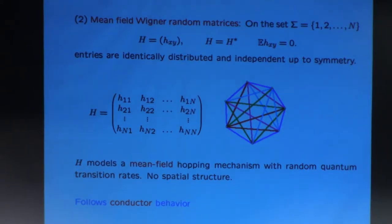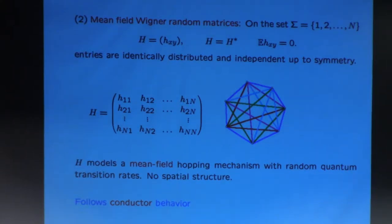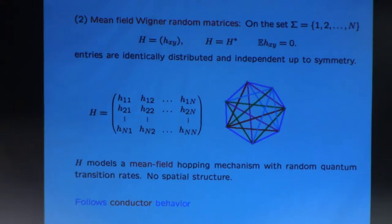So it will be a 7 by 7 matrix, and the matrix elements describe the quantum transition probability — the quantum transition rate between two sites. Because the matrix has this mean-field structure where the distribution and size of every matrix element is the same, that means the quantum jump from one site to any other site is roughly of the same order of magnitude. The randomness means individual values differ, but their size is roughly the same. So in this random matrix, jumping from any site to any other site immediately in one step is roughly equally likely — it's a mean-field hopping mechanism.